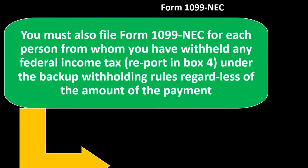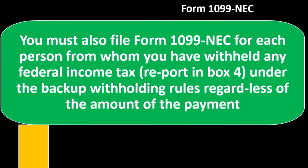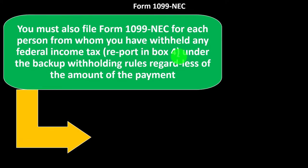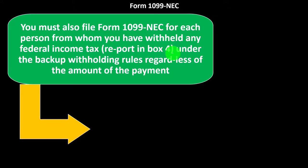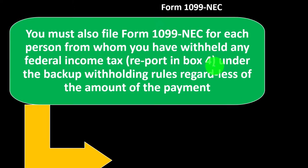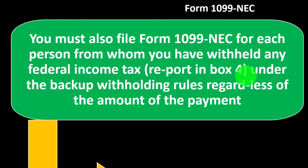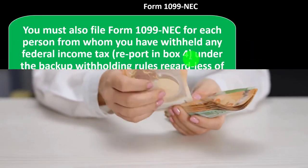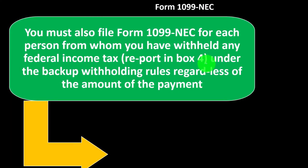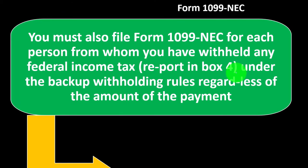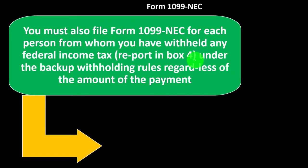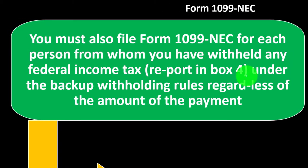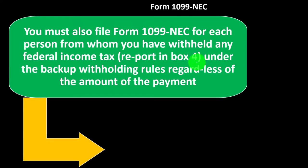You must also file Form 1099 NEC for each person from whom you have withheld any federal income tax, reported in box four. Normally with a 1099 NEC you don't have withholdings, because the contractor is responsible for paying their own taxes through estimated tax payments — that's part of the benefit of them not being an employee. However, if they don't provide you with their information, you might be required to do the withholding anyway and report it in box four. Or if they request withholding for whatever reason, you would withhold their federal income tax in box four.